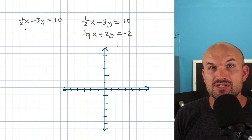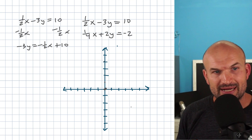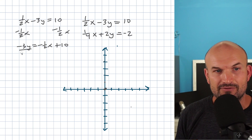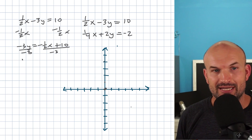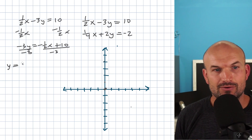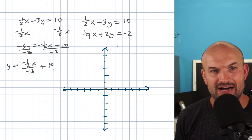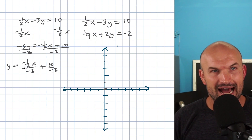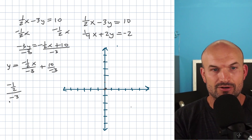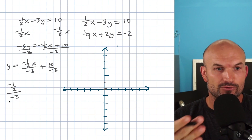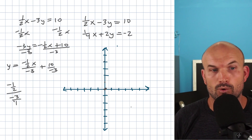The fractions are not going to make the inverse operations any more difficult — we just have to undo what's happening to y. We recognize y is being added to 1/2 x and multiplied by negative 3. So just like the previous problems, we need to undo these inverse operations. First, subtract the 1/2 x from both sides. Now we need to undo multiplying by negative 3, so we divide by negative 3 on both sides. Make sure you distribute that negative 3 to both terms.